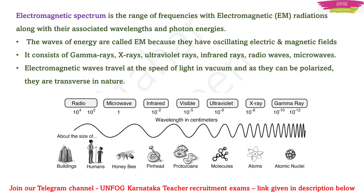I have this picture which clearly shows how the wavelength of each electromagnetic radiation changes. Here you can see, right from radio waves till gamma rays, the wavelength of these electromagnetic radiations decreases. We know that frequency is inversely proportional to wavelength, so when wavelength is decreasing, it means that frequency is increasing for the electromagnetic radiations in the electromagnetic spectrum.